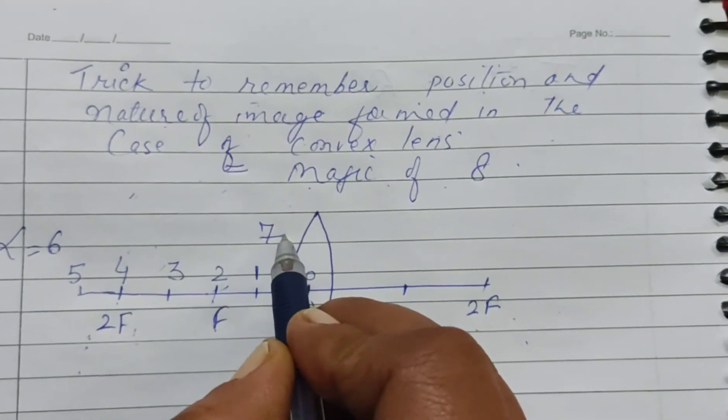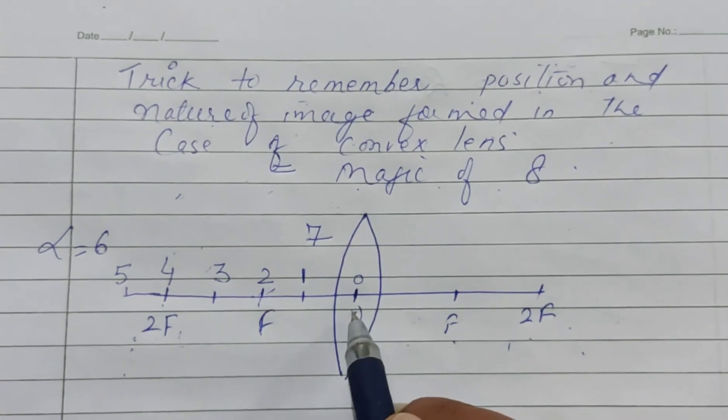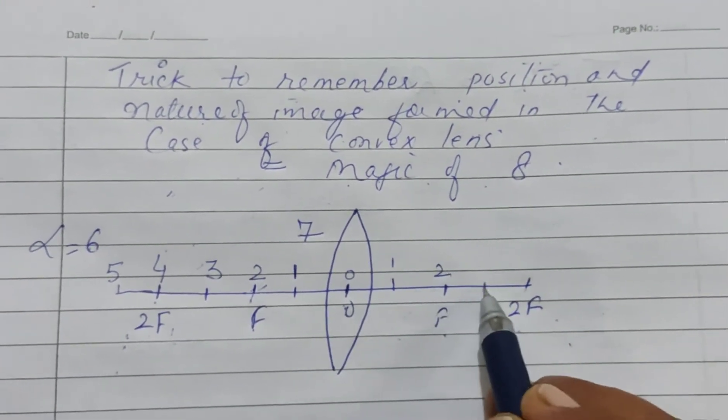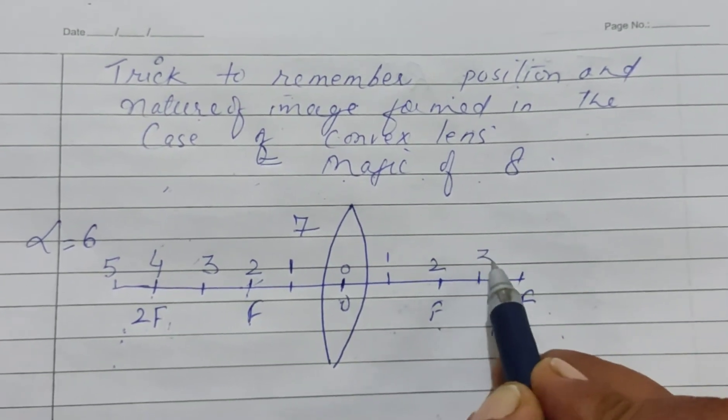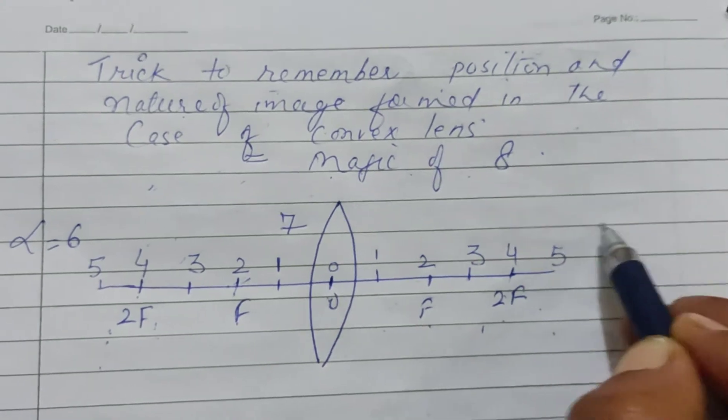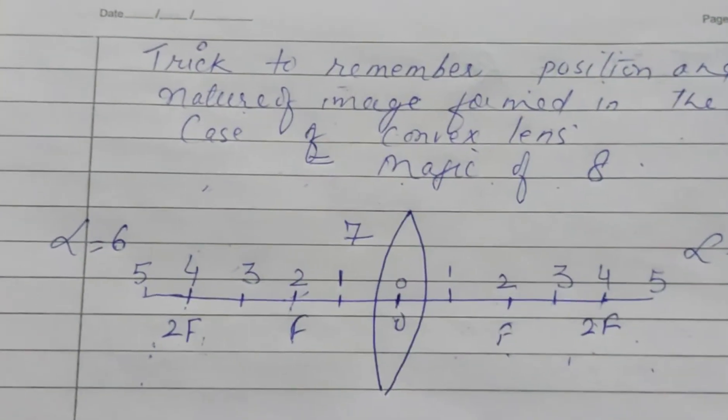Same on right side. We will do 0 here, between o and f we will have a 1. This will be 2 here. Between f and 2f will have 3, 2f will be 4, beyond 2f will be 5, and we'll write 6 for the infinity.